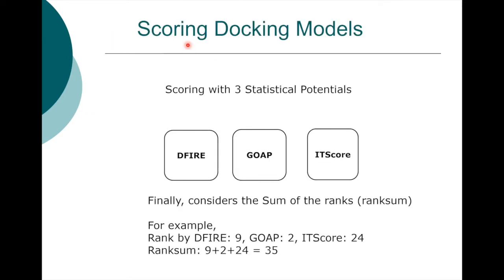After structures are generated and clustered, at the end the models will be ranked by a scoring function. For the scoring function, the models already have a geometry-based score, but at the end we use a combination of three statistical potentials.